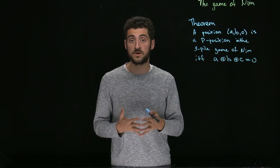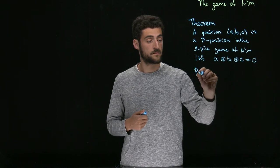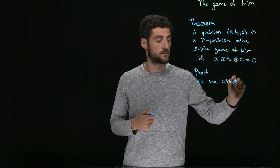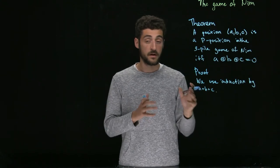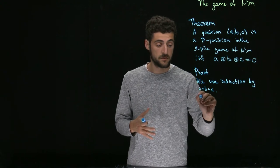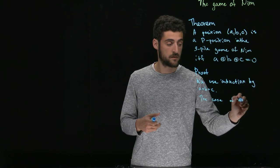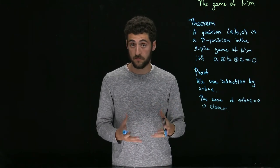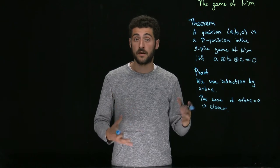The proof of the theorem is not that complicated — it's just induction on the sum of A, B, and C. It's clear that A plus B plus C equals zero only if all three of them are zero. In this case, it's clearly a P position because it's a terminal position, and their NIM sum is also clearly equal to zero.